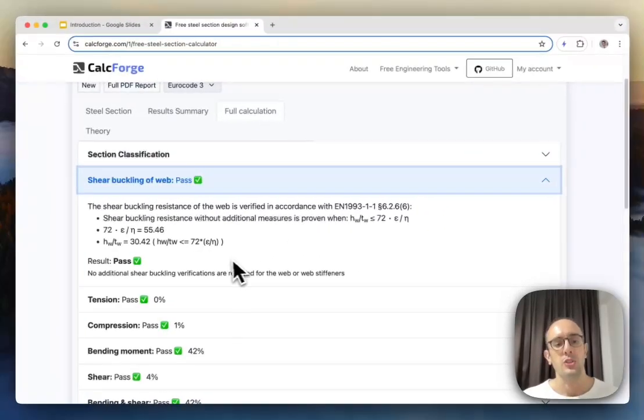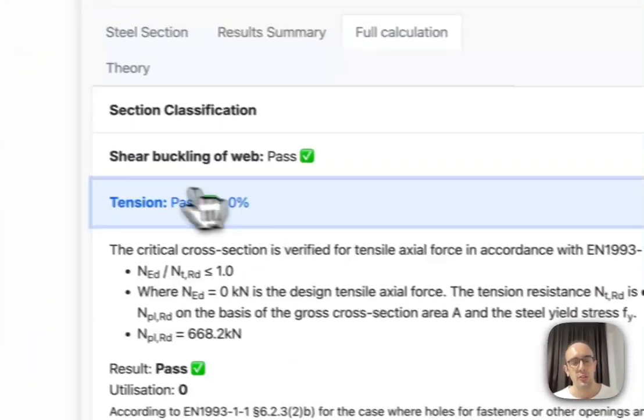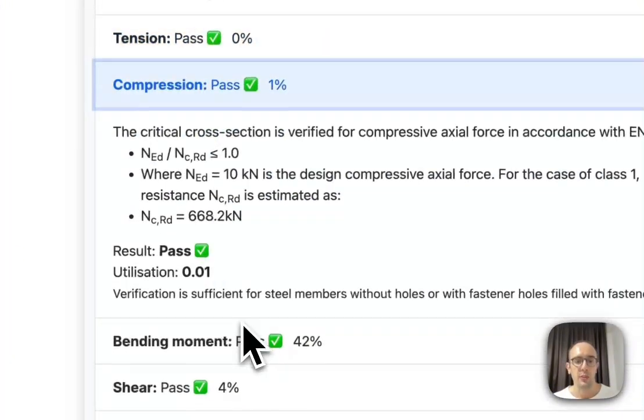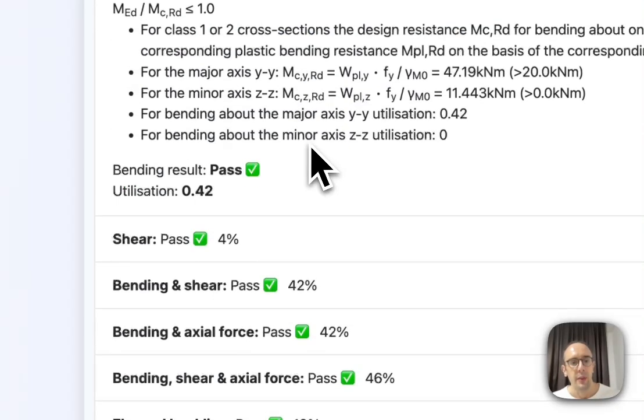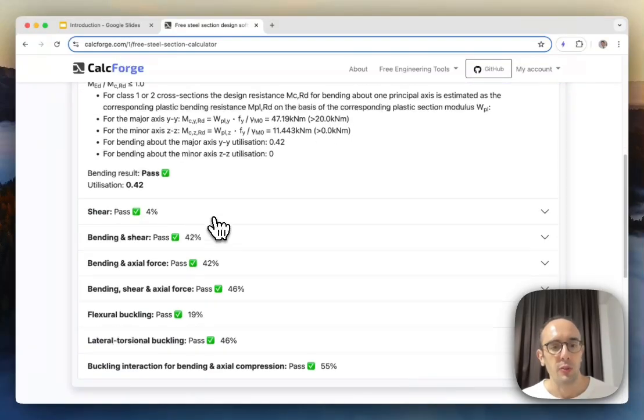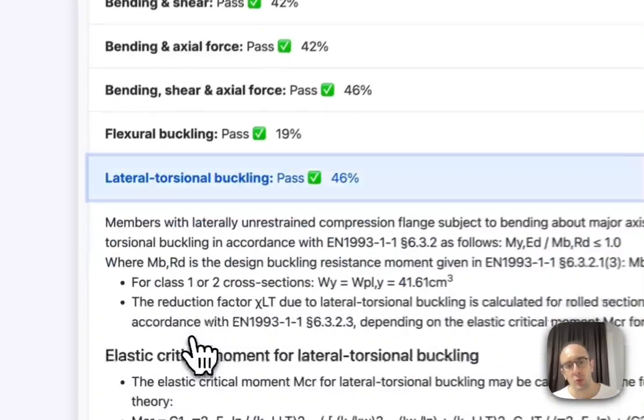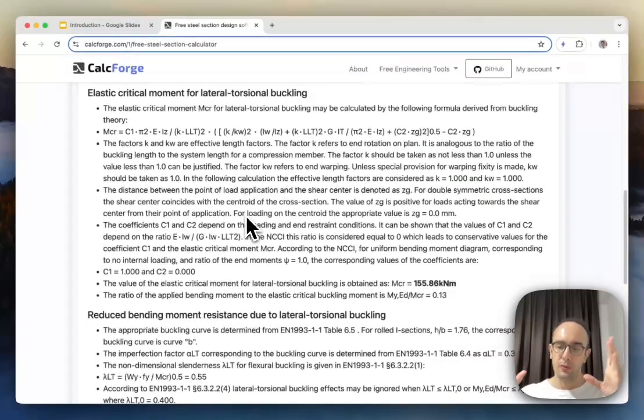And then it basically talks you through the different checks so it does shear buckling of the web. So it does some checks here Eurocode checks from the clauses. Tension so there's no tension in this case so it's zero percent. There is a little compression so it does the compression checks on this steel section. Bending so we do some bending moment checks checking against the resistance of this section the applied bending forces.